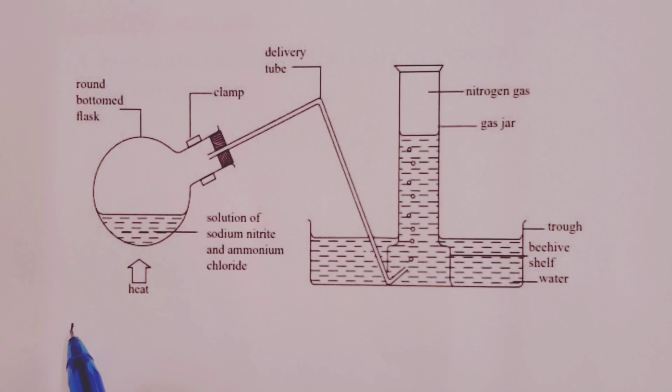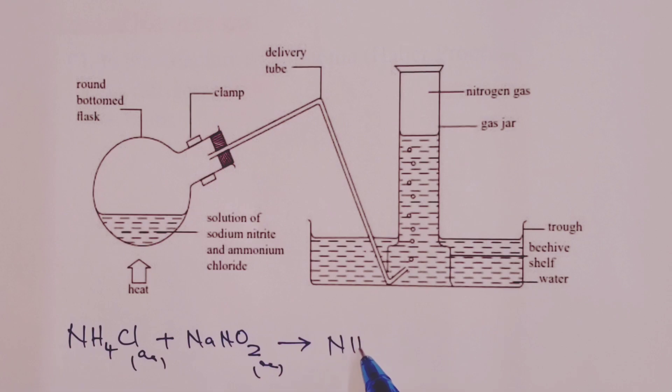When it comes to the equation for the reaction, we have ammonium chloride, aqueous, reacting with sodium nitrite. Of course, this is through heating. We obtain ammonium nitrite and sodium chloride.